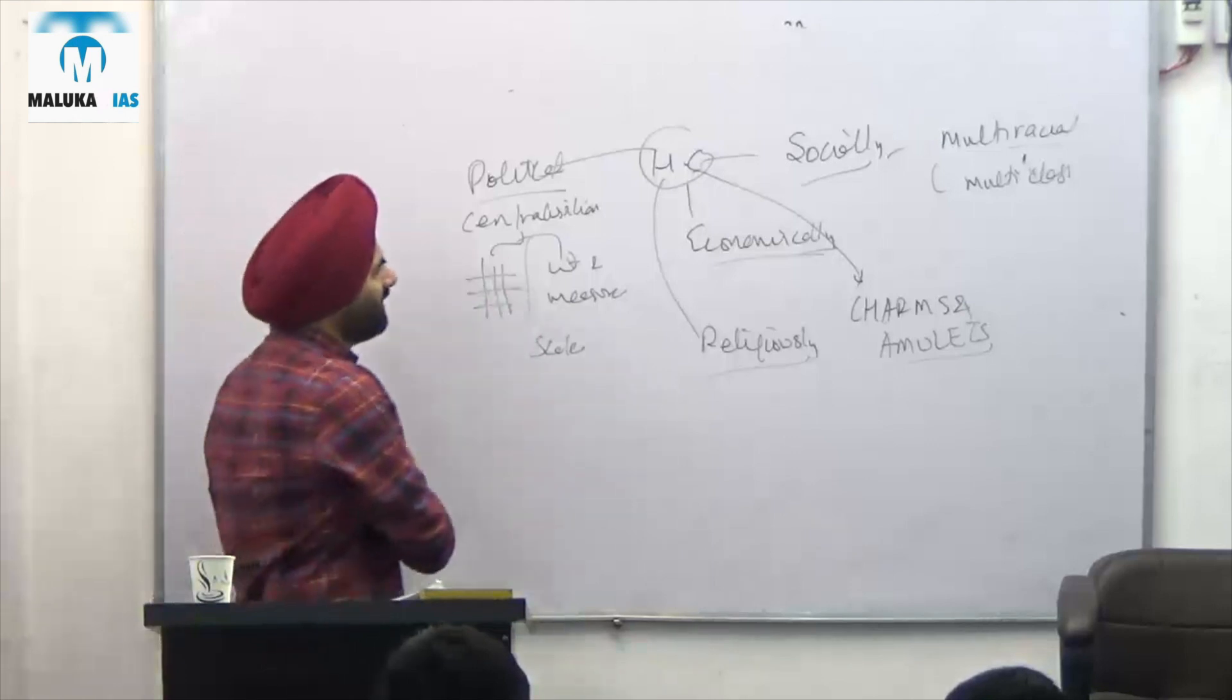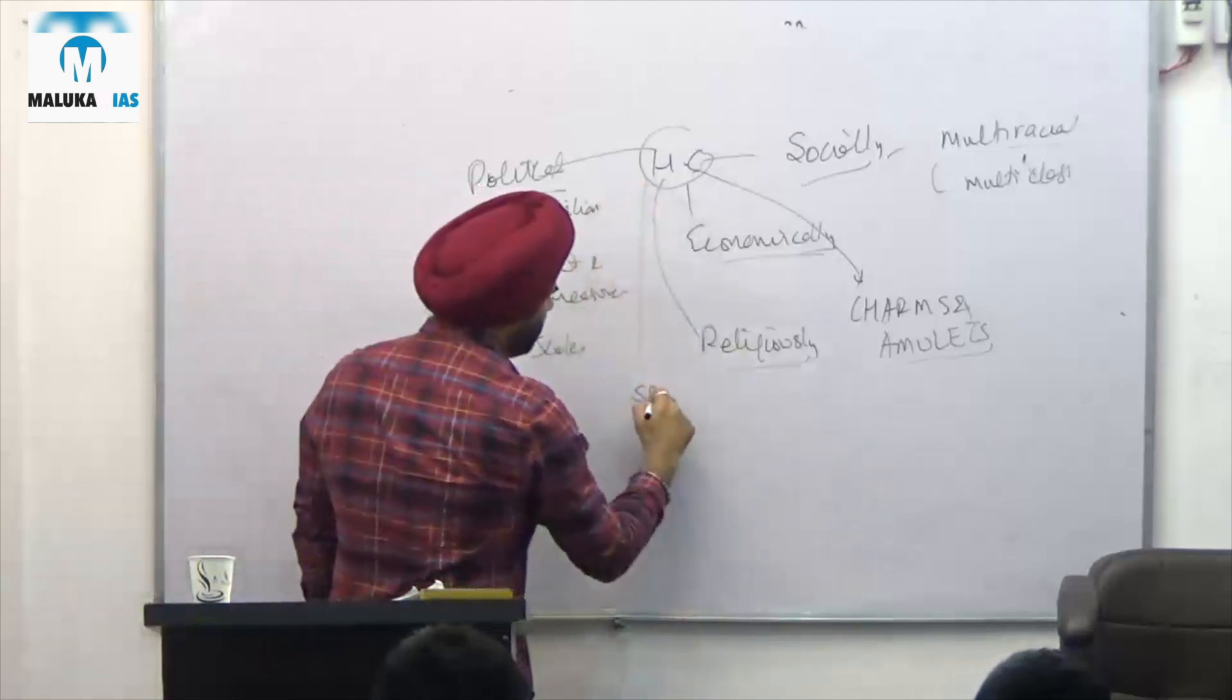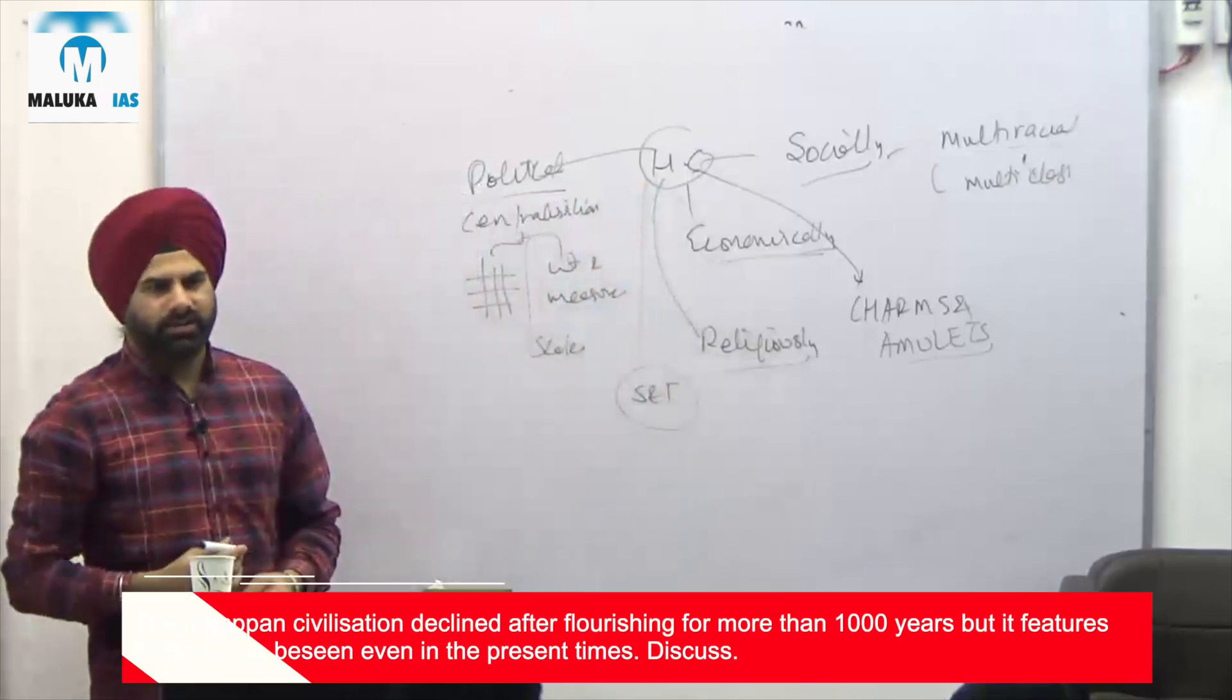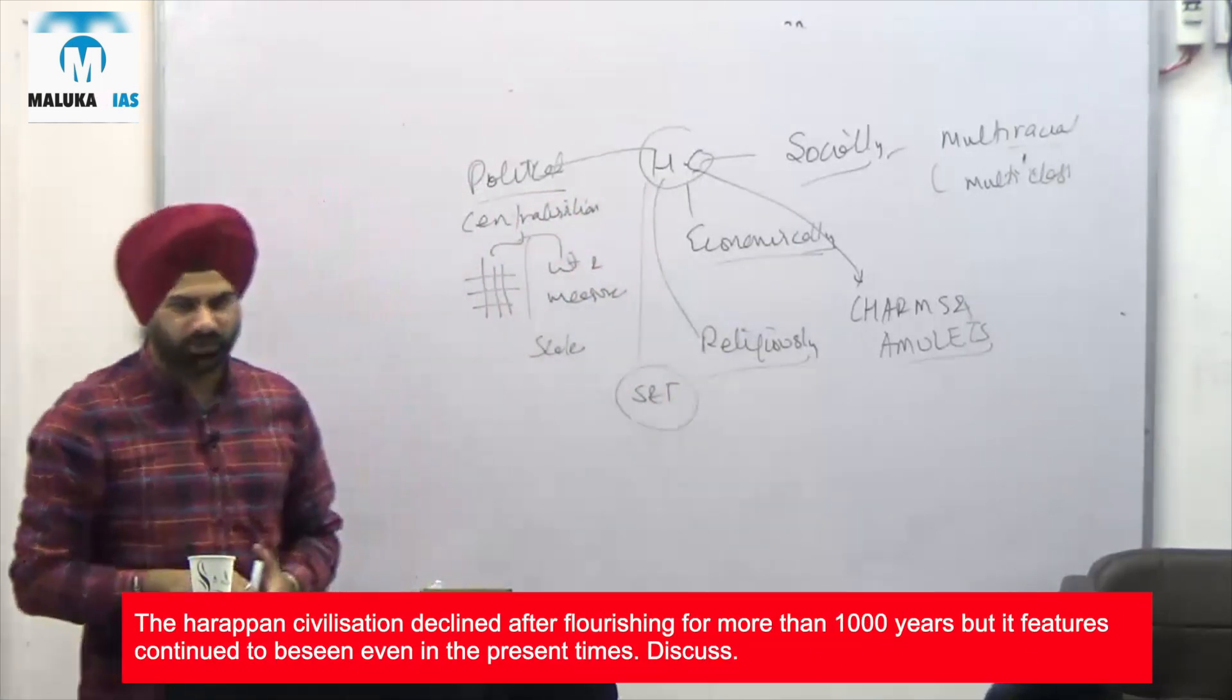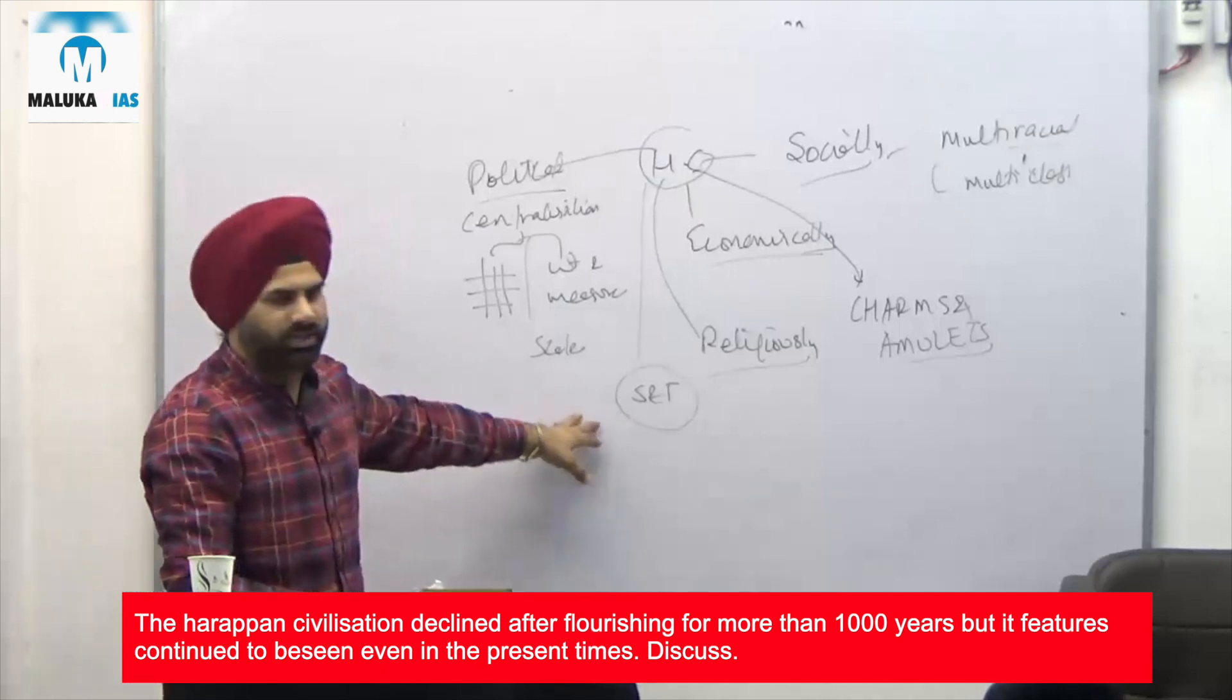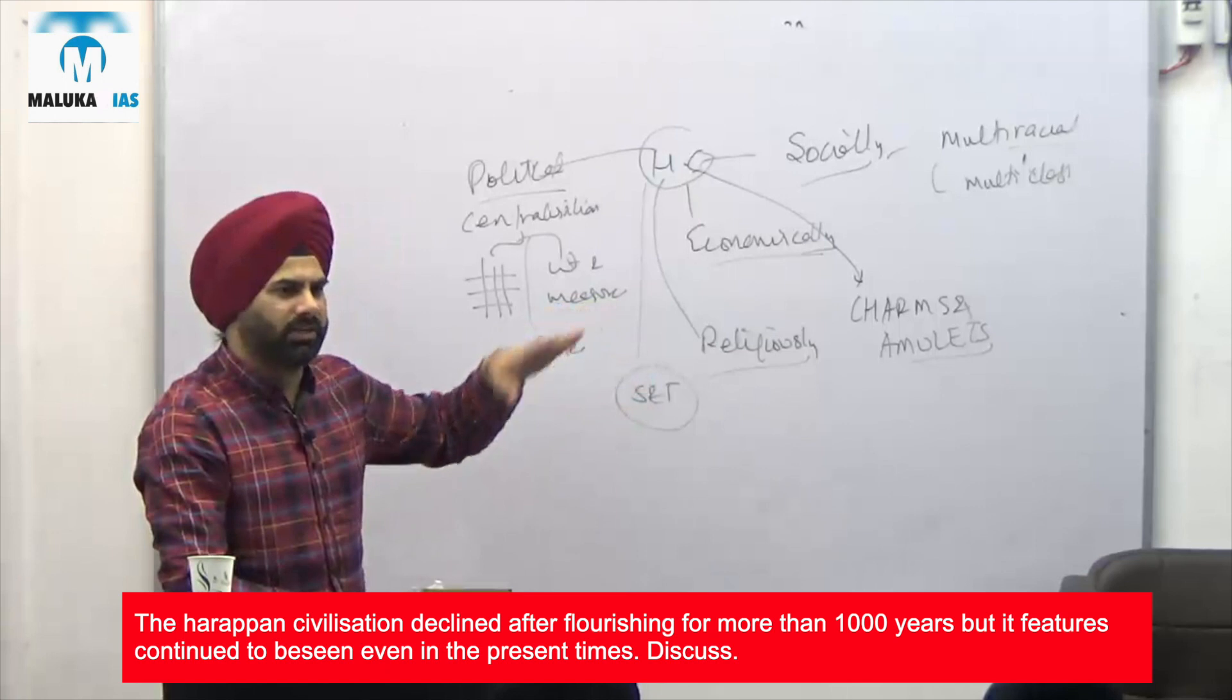Socially, politically, science and technologically - development. The construction of the great granary, the construction of various other things, or for example the surgical expertise that was there. Everything aims at science and technological development and advancement that is being done.